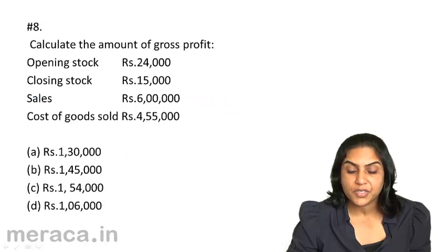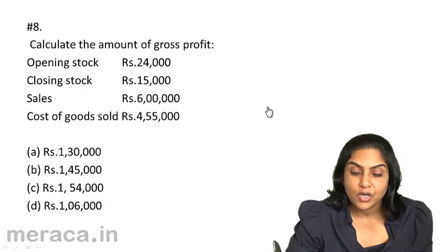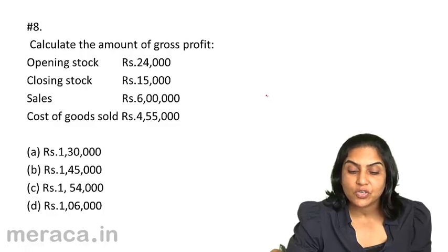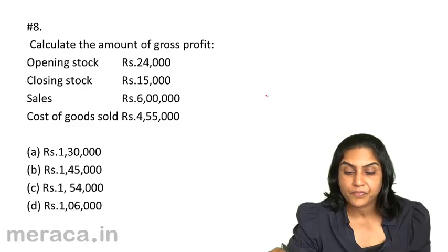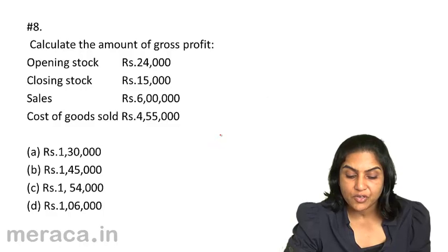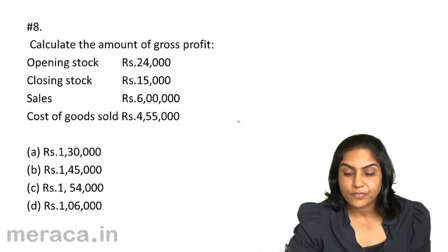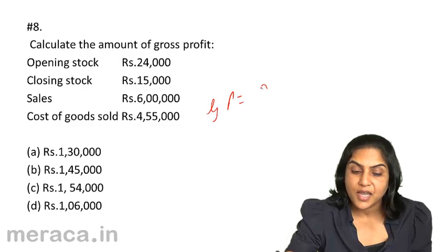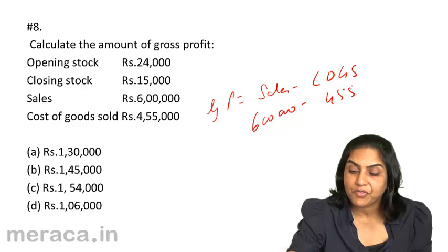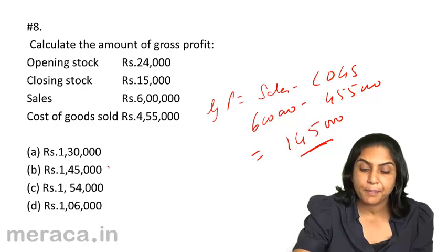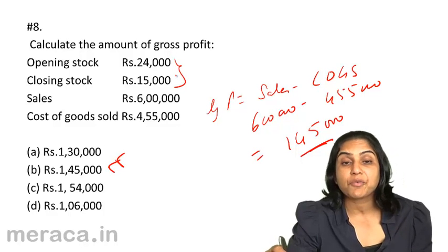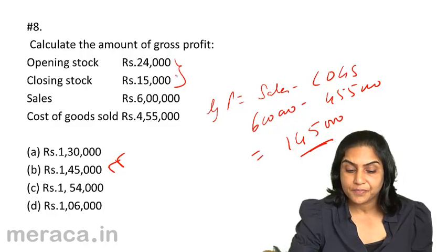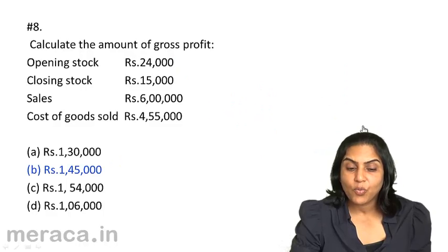Calculate the amount of gross profit when opening stock is Rs. 24,000, closing stock is Rs. 15,000, sales is Rs. 6,00,000, and cost of goods sold is Rs. 4,55,000. Options: A. 1,30,000; B. 1,45,000; C. 1,54,000; D. 1,06,000. Gross profit is sales minus cost of goods sold: 6,00,000 − 4,55,000 = Rs. 1,45,000. Opening stock and closing stock information is redundant in this case. The correct answer is B, Rs. 1,45,000.